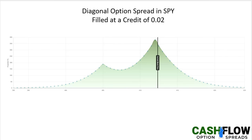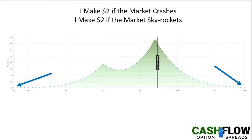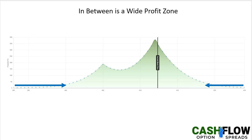So with that said, I'm going to jump right into the trade because it's a very interesting scenario. First of all, this is a diagonal option spread in SPY, and I was filled at a credit of $0.02 on a rather large lot size — actually several trades. What you're looking at is a projection graph of this trade as of expiration. Since I have a credit of two cents, that means there's no risk to the downside, and based on the structure of the trade, there's also no risk to the upside. This is a call spread.